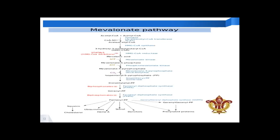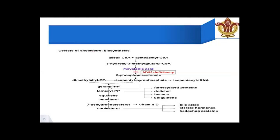Then from mevalonate phosphate it forms isopentenyl pyrophosphate and dimethylallyl pyrophosphate. These two combine together to form geranyl pyrophosphate, and from geranyl pyrophosphate to farnesyl pyrophosphate, which is going to form sterols, dolichols, and different squalenes and cholesterols. From farnesyl pyrophosphate, products include farnesylated proteins, dolichols, coenzyme Q10, and ubiquinones.